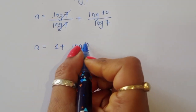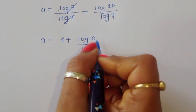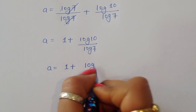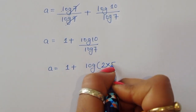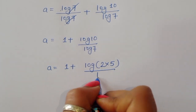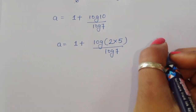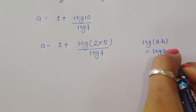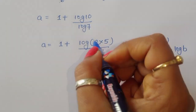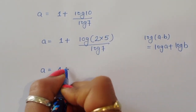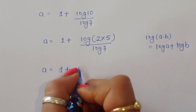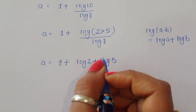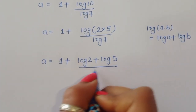Now for log of 10, we can write 10 as 2 times 5. So A is equal to 1 plus log of 2 times 5 divided by log of 7. Again using the formula log of A times B is equal to log of A plus log of B, we get A is equal to 1 plus log of 2 plus log of 5 divided by log of 7.